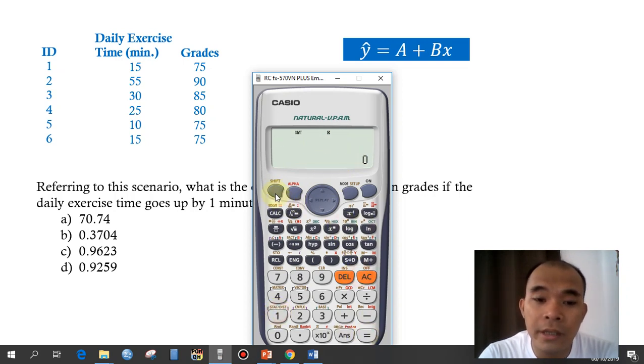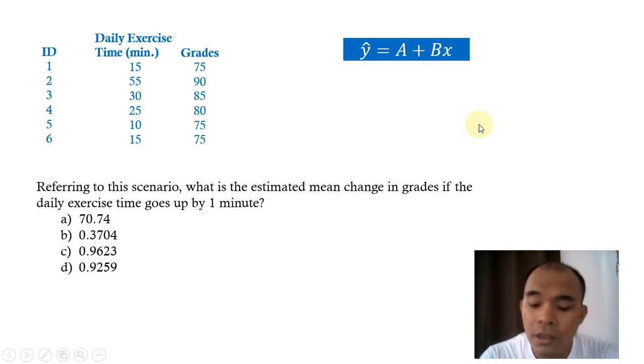And then our b is shift, stat, 5, 2, and then equals, so 0.37. In this particular case, that is the equation, that is our model.